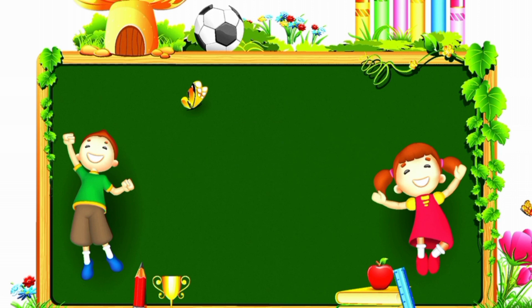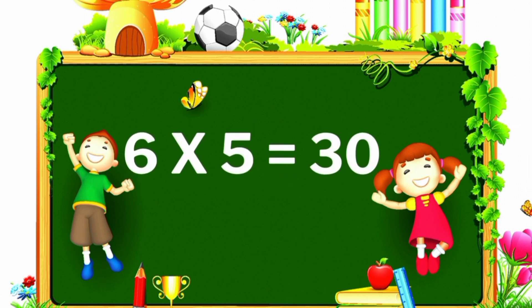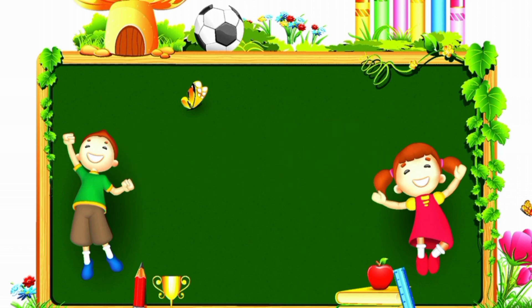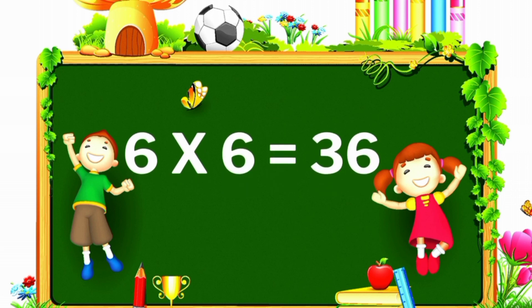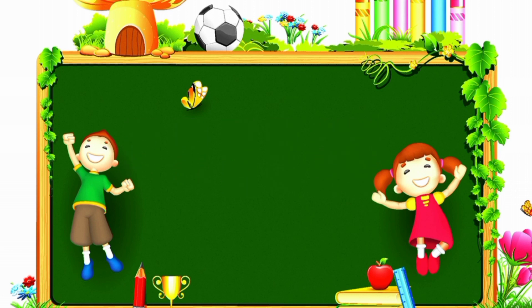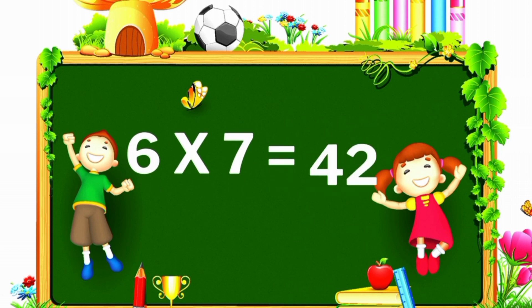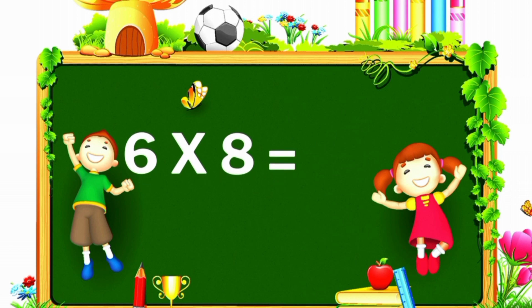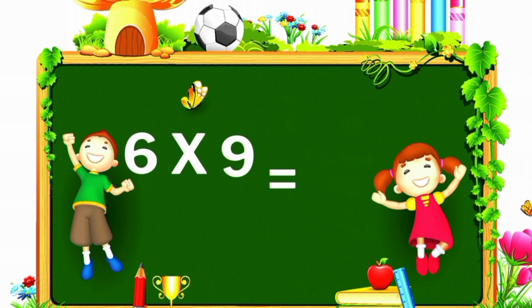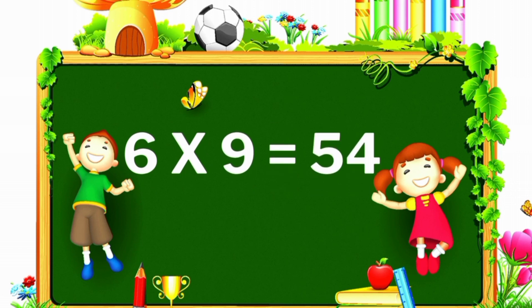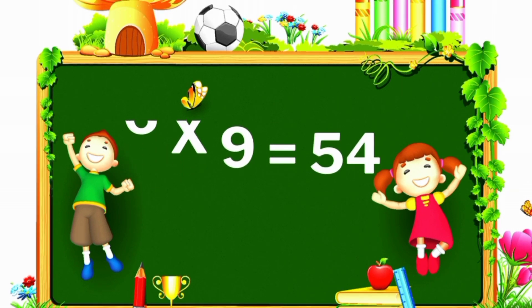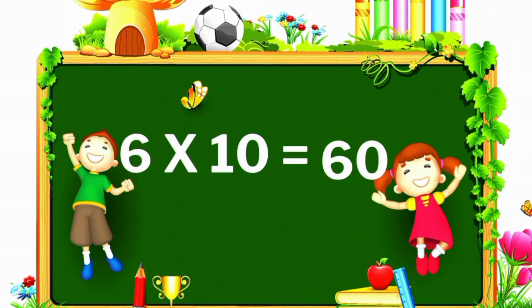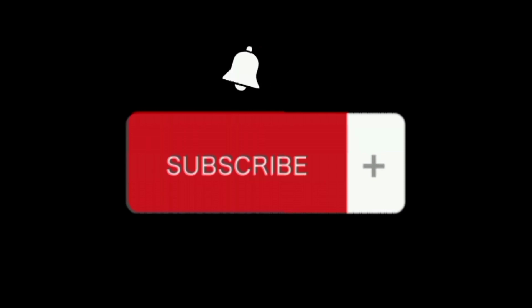Six fours are twenty-four. Six fives are thirty. Six sixes are thirty-six. Six sevens are forty-two. Six eights are forty-eight. Six nines are fifty-four. Six tens are sixty. Please like and subscribe.